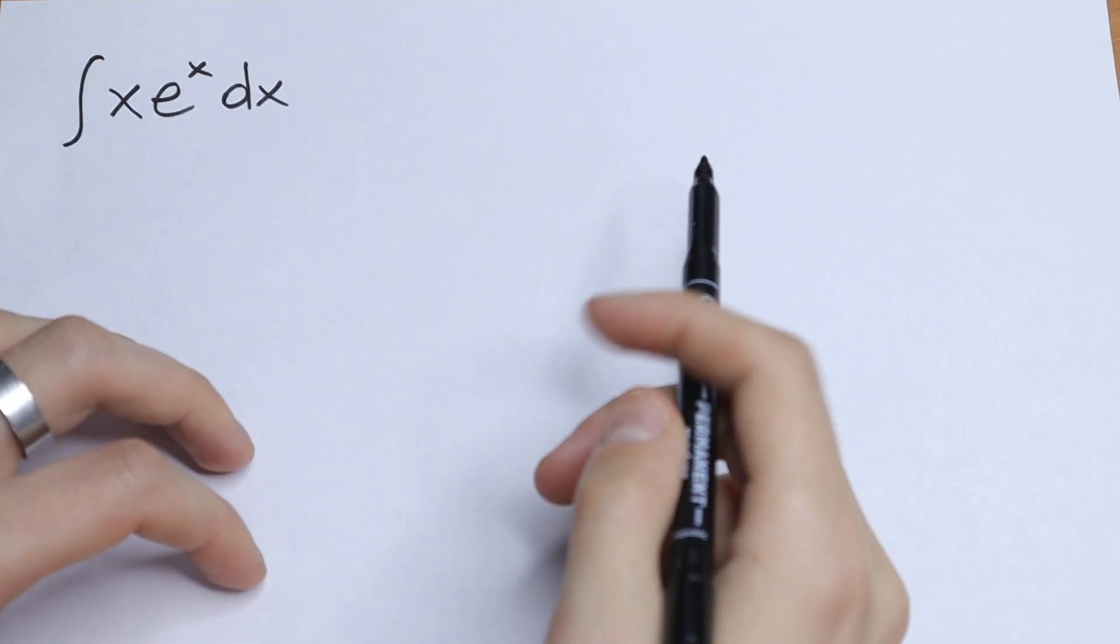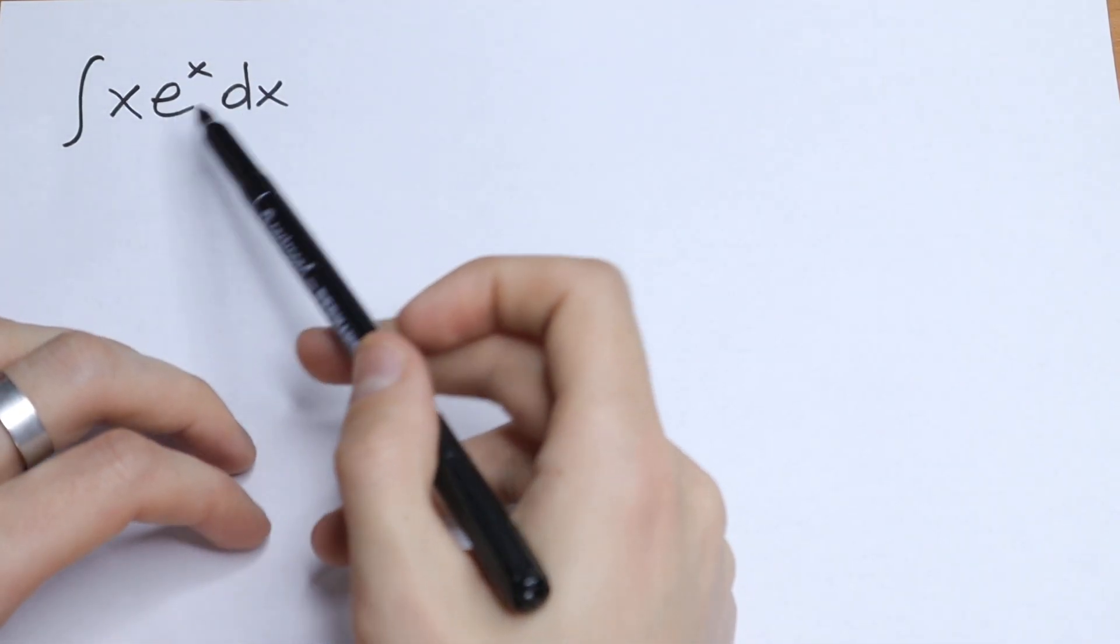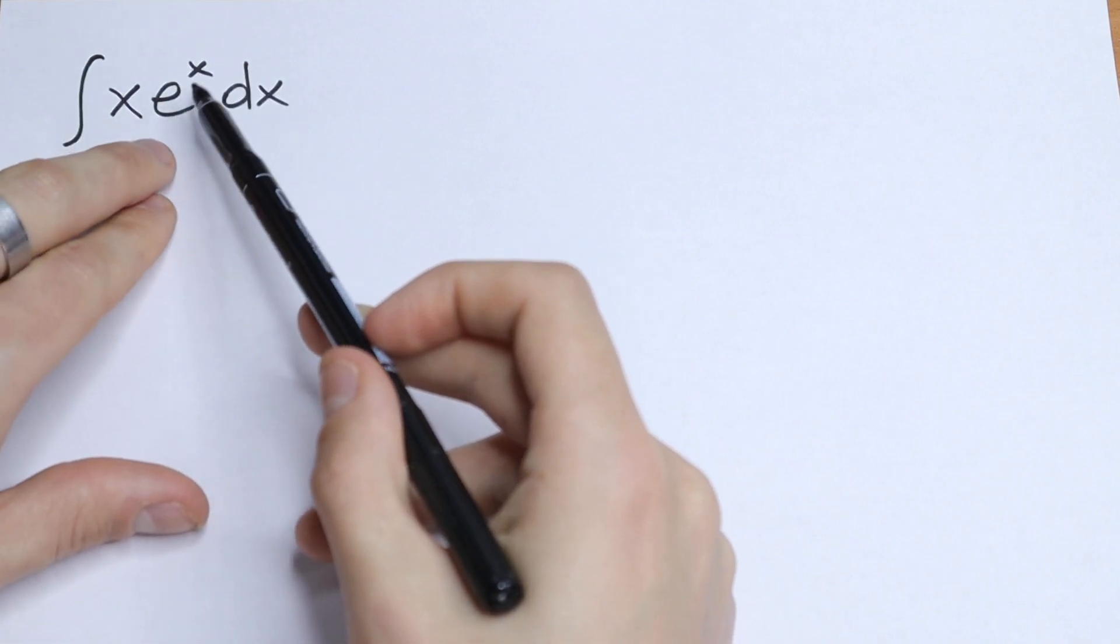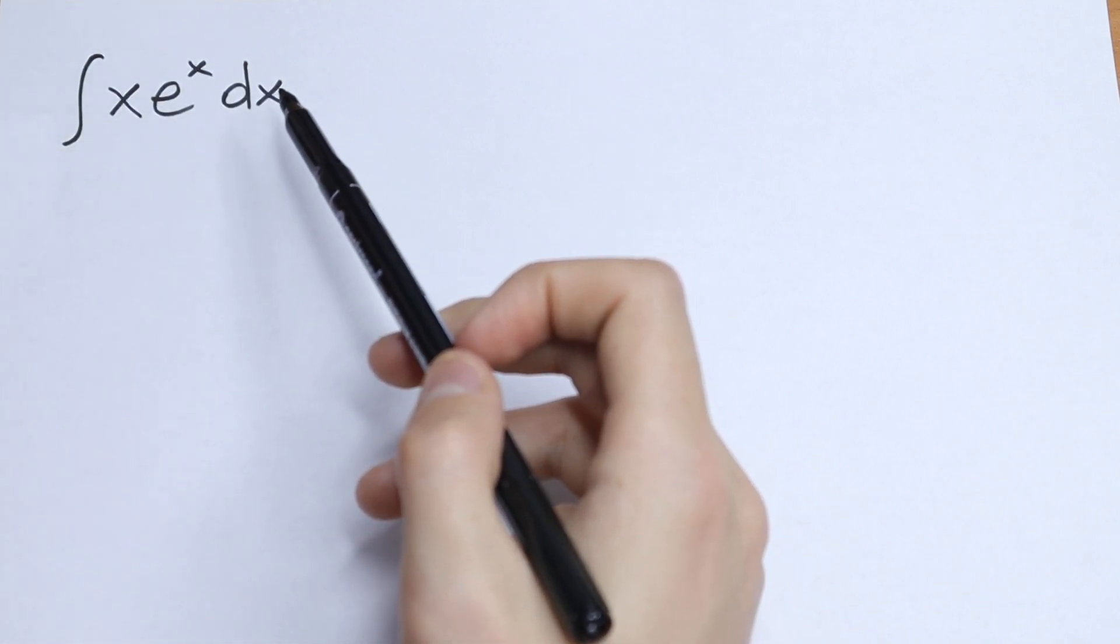Hello everyone, welcome back to Higher Mathematics! Today we have an interesting undefined integral: What is the integral of x times e to the power x dx? So how can you solve this?